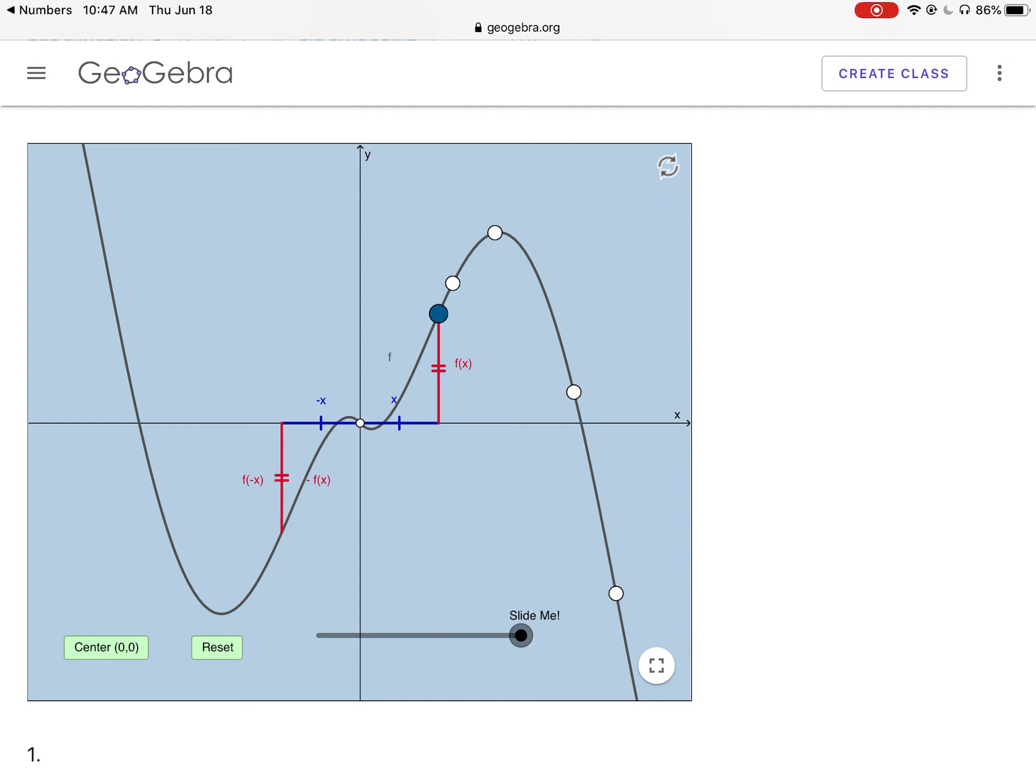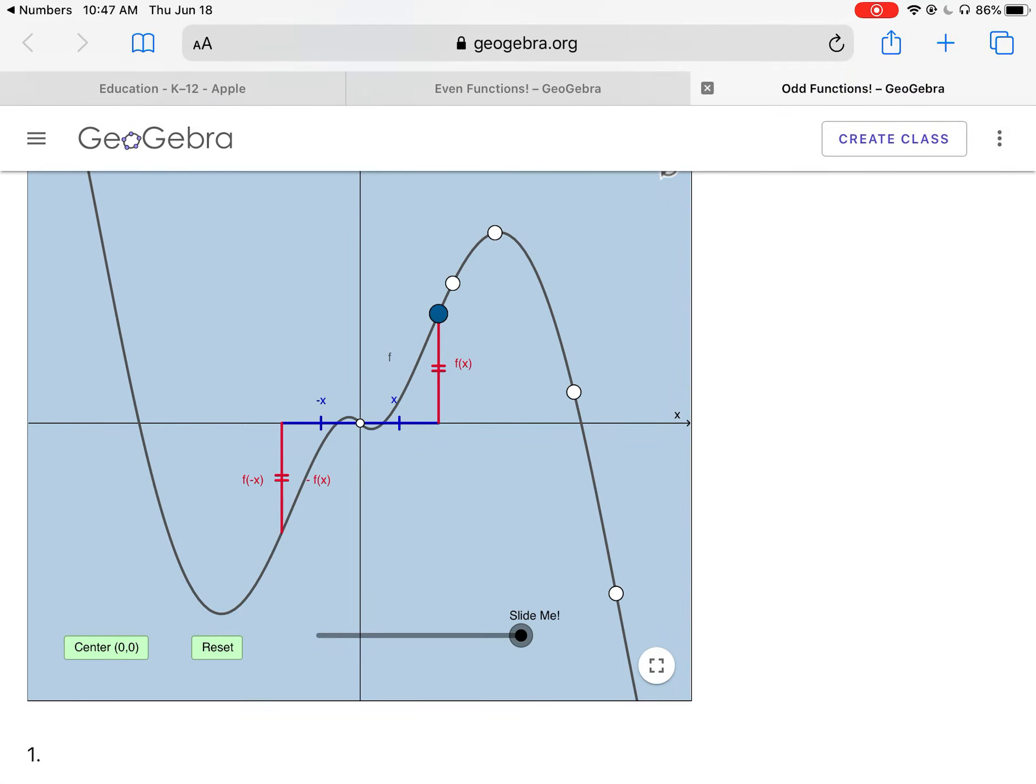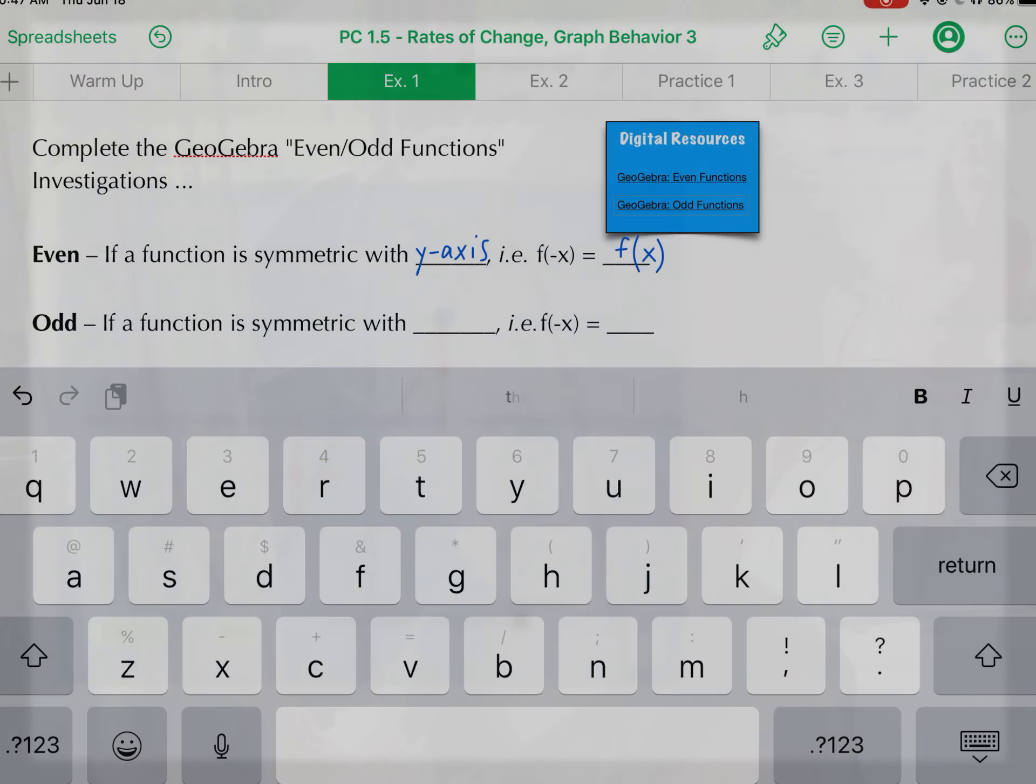F(x) and negative f(x). One's positive, one's negative is basically what we're showing here. So that's algebraically how we can tell that we are odd.